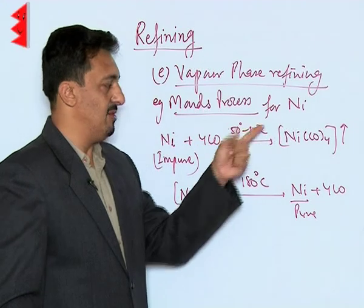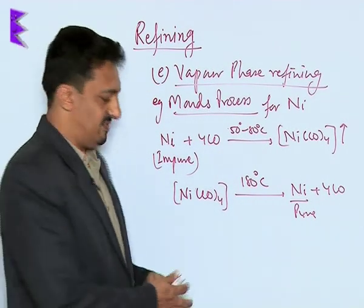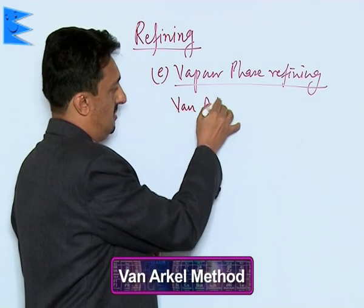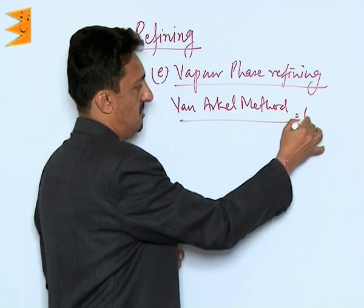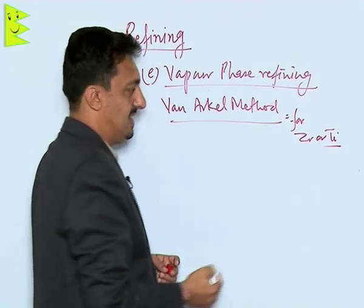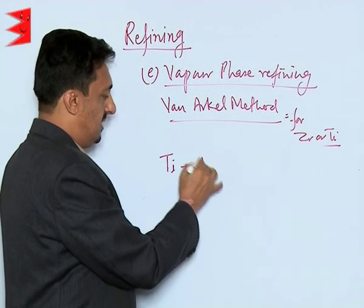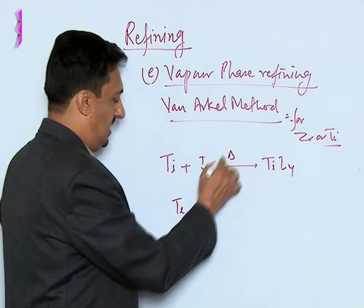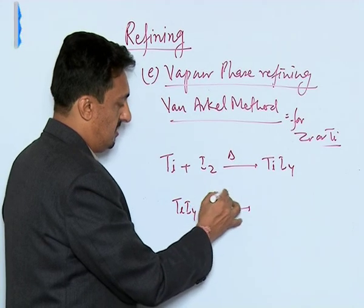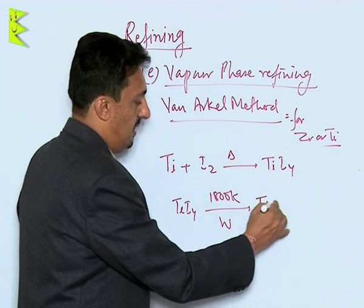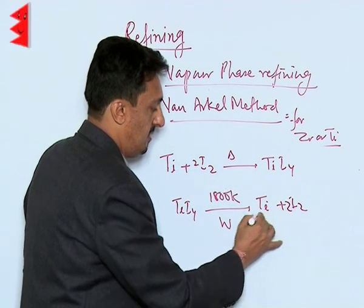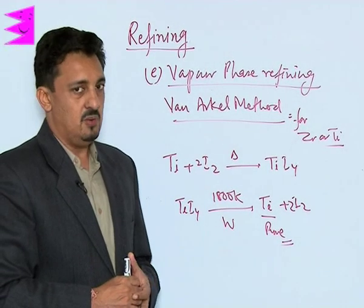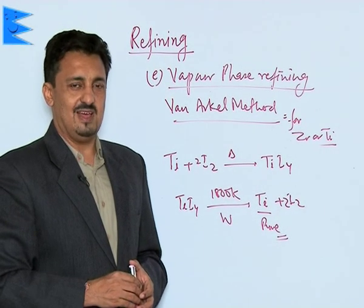Another example of vapor phase refining is the Van Arkel method, used for zirconium or titanium. In this case, titanium is heated with iodine to give titanium tetraiodide. This titanium tetraiodide is then decomposed at around 1800 Kelvin on a tungsten filament to give back pure titanium. Similar reactions are used for zirconium. This is how refining of metals like titanium and zirconium is carried out.